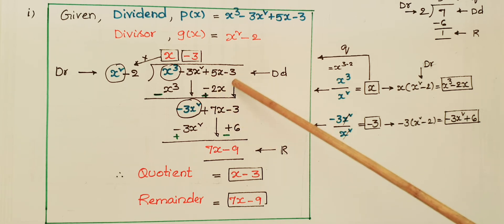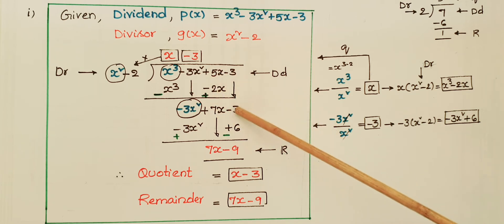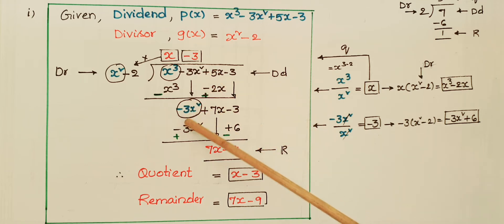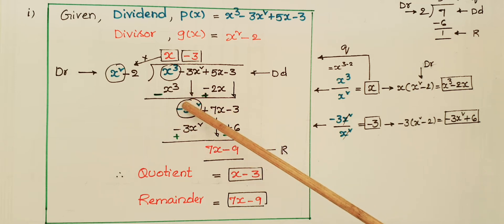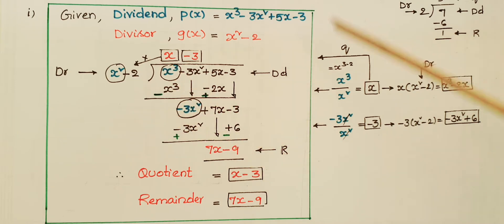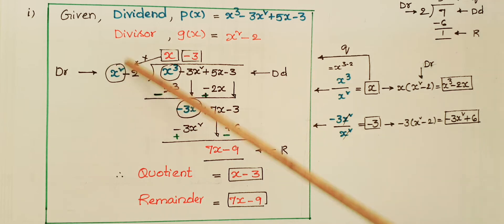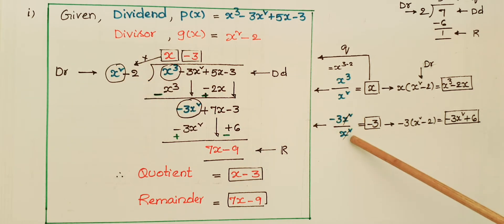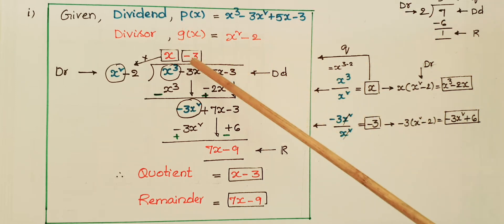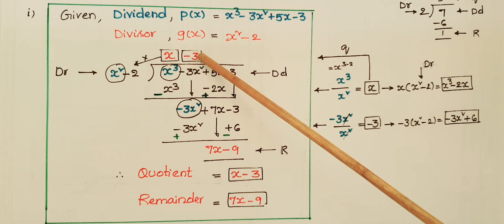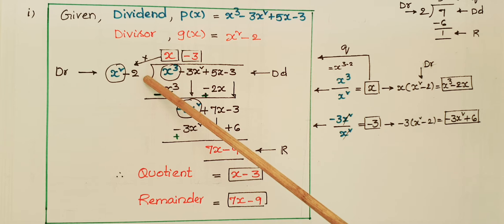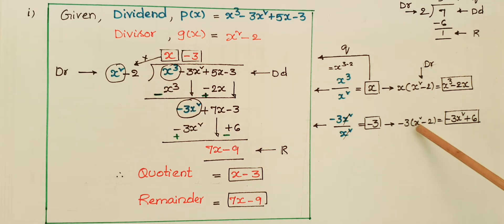5x plus 2x gives 7x. Bring down the next term, -3. Now we have -3x² + 7x - 3. Take the first term -3x² and divide by x² (the first term of the divisor): -3x² divided by x² equals -3. Write -3 at the quotient place.